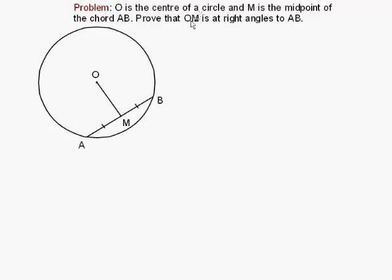Now what we're going to do is prove that OM is at right angles to AB. In other words, when you go down to here, this is a right angle. OM is at right angles to AB.